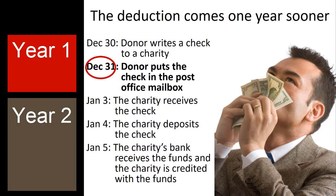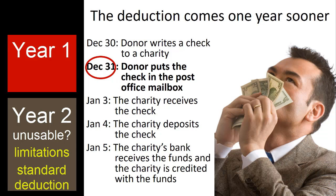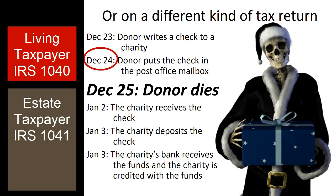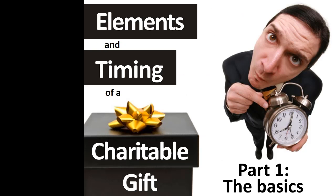Much more substantial consequences may result when the tax circumstances are different in different years. The deductible gift may not be usable in the later year due to, for example, charitable deduction income limitations or use of the standard deduction. In such cases, knowing the exact date when the charitable gift is complete for income tax purposes can be the difference between a valuable deduction and a useless deduction. The difference in the date on which a charitable gift becomes complete may also have significance if the donor happens to die during the process.